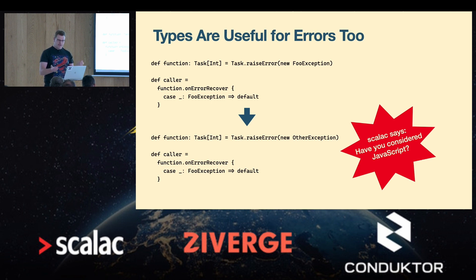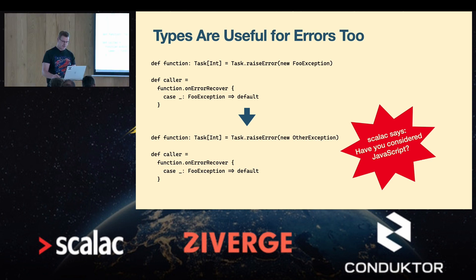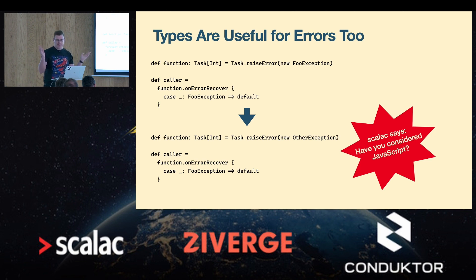This same thing comes up with errors. Your code can end up producing a different kind of error than expected. This code here is representative of the mainstream standard way of handling errors in Scala, but the compiler can't really help you identify mistakes like this. Your error handling becomes useless and won't do what you expected. It's strange that this is the standard, given that Scala has a very powerful and sophisticated type system, yet the consensus is we don't need to use it for error handling.